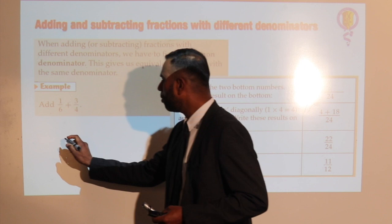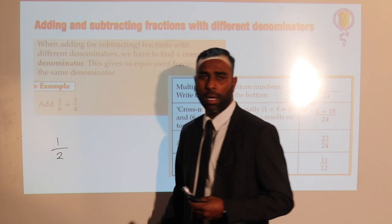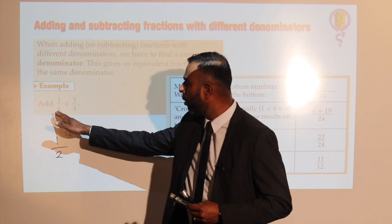For a fraction, if I have 1 over 2, the top part is your numerator and the bottom part is your denominator. We'll be looking at how to add two fractions with different bottom parts — different denominators.